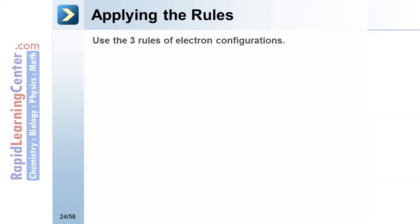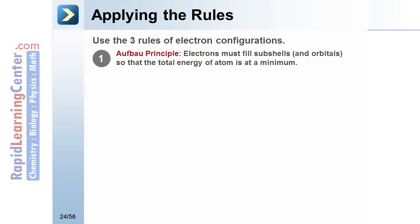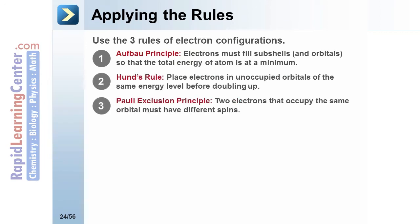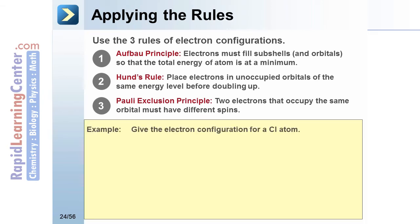Let's apply these rules to an example: the Aufbau principle, Hund's rule, and the Pauli exclusion principle. Give the electron configuration for a chlorine atom. No charge is written, therefore it's 0. The atomic number of chlorine is 17. Zero equals 17 minus electrons. There are 17 electrons that need to be placed.